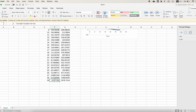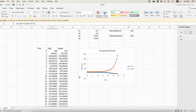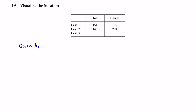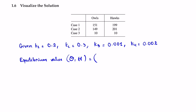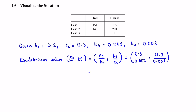That's why we stop at the 29th time period — the hawk population hits zero there. With k1 equals 0.2, k2 equals 0.3, k3 equals 0.001, and k4 equals 0.002, the equilibrium point is (O, H) equals (k2/k4, k1/k3) equals (0.3/0.002, 0.2/0.001) equals (150, 200). When initial values match the equilibrium, populations remain constant.